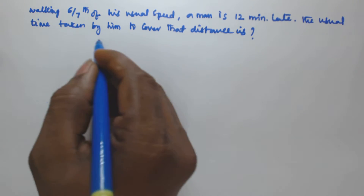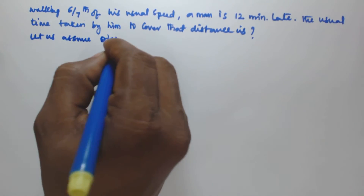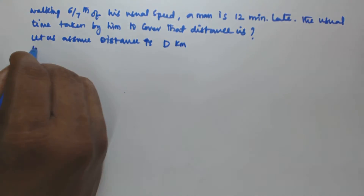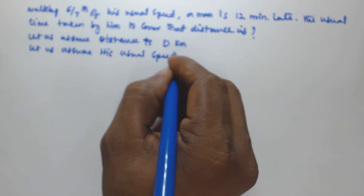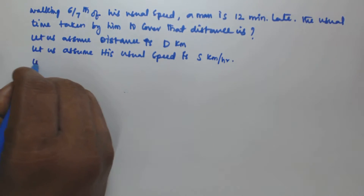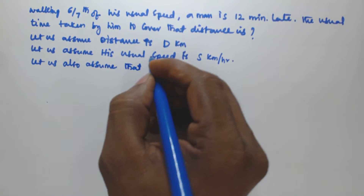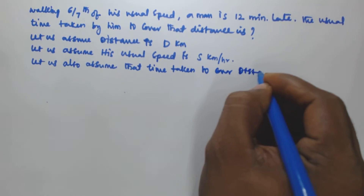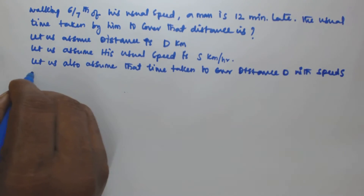So let us assume the distance is d kilometers, and let us assume his usual speed is s kilometers per hour. Let us also assume that the time taken to cover distance d with speed s is t hours.